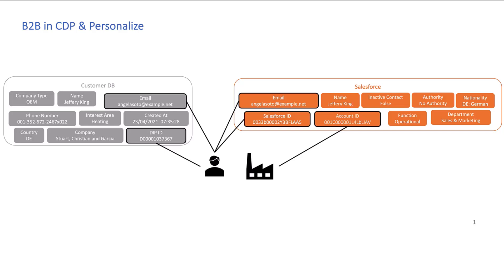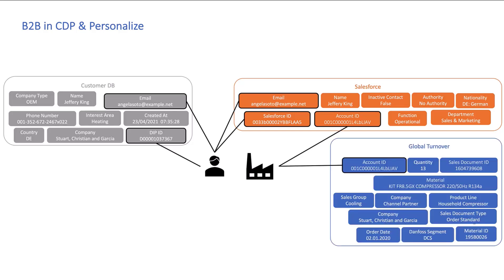We also had data coming in from Salesforce. In the Salesforce data, we again had their email, a Salesforce ID, and a reference to the account that the person was part of — so an account ID related to the individual. And then finally, we had historical order data, and all of the orders were stored against the account. For example, this example here is for a household compressor — all the orders were on the account.